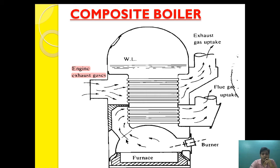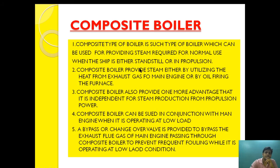The importance of the composite boiler is that it is independent of each system — the engine exhaust gas system is not dependent on the furnace, and the furnace system is not dependent on the engine exhaust. Both work independently for steam generation. Furthermore, if the engine is running at slow, dead slow, or half-ahead speed, the oil-fired boiler can provide additional heat to supplement steam generation and meet the ship's requirements.